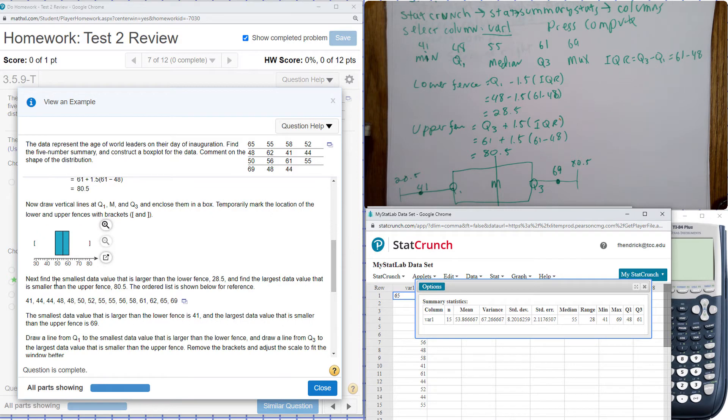So now find the smallest data value that is larger than the lower fence. In this case here, the smallest data value that's larger than the lower fence is 41. And the largest data value that is smaller than the upper fence is 69. Those are your maxes and your mins.